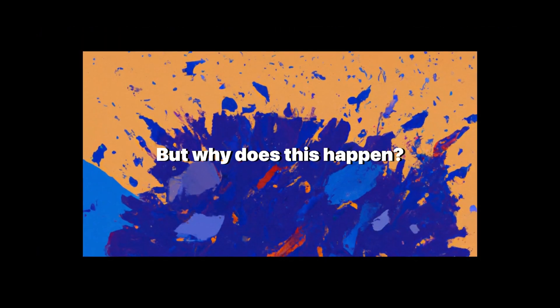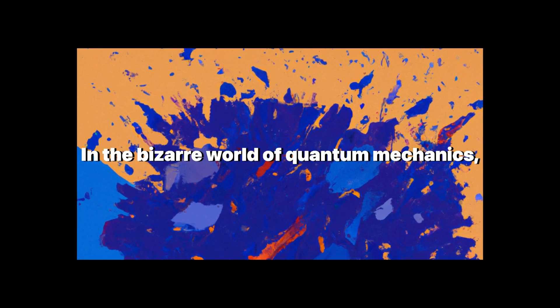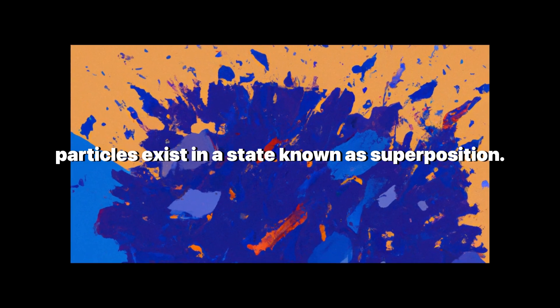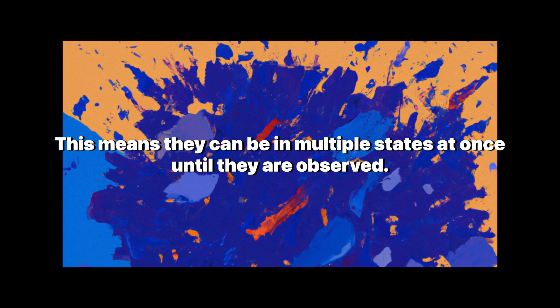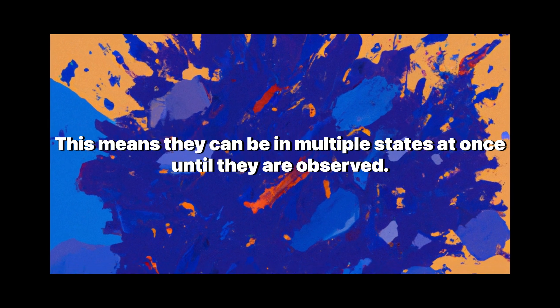But why does this happen? In the bizarre world of quantum mechanics, particles exist in a state known as superposition. This means they can be in multiple states at once until they are observed.